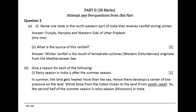Question 3. Name one state in the northwestern part of India that receives rainfall during winter. Answer: Punjab, Haryana and western side of Uttar Pradesh. What is the source of this rainfall? Answer: winter rainfall is the result of temperate cyclones originating from the Mediterranean Sea.